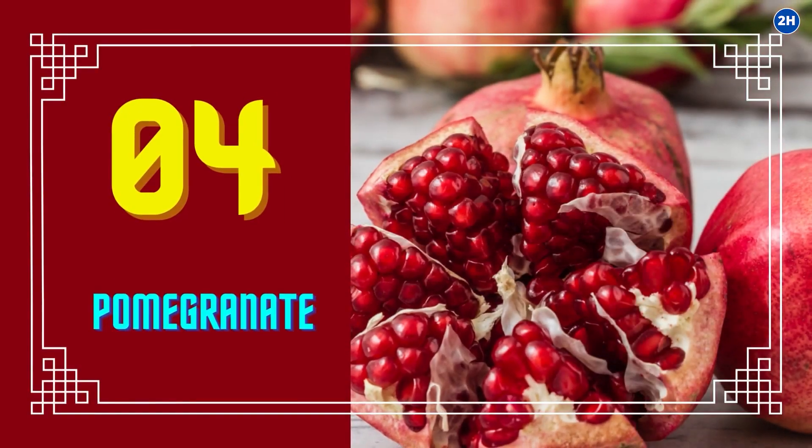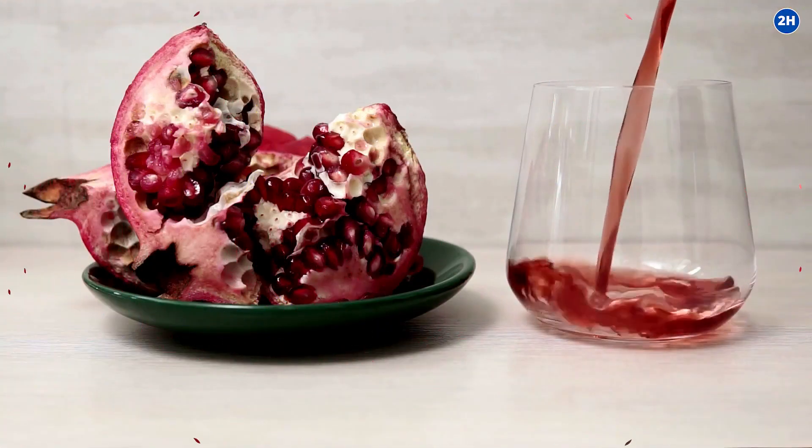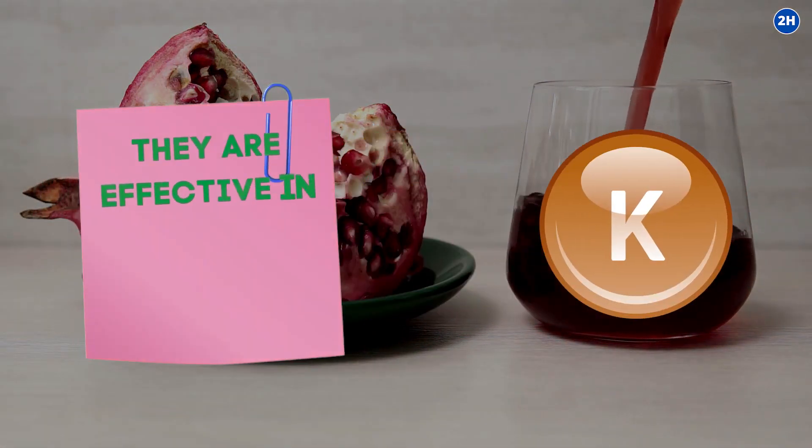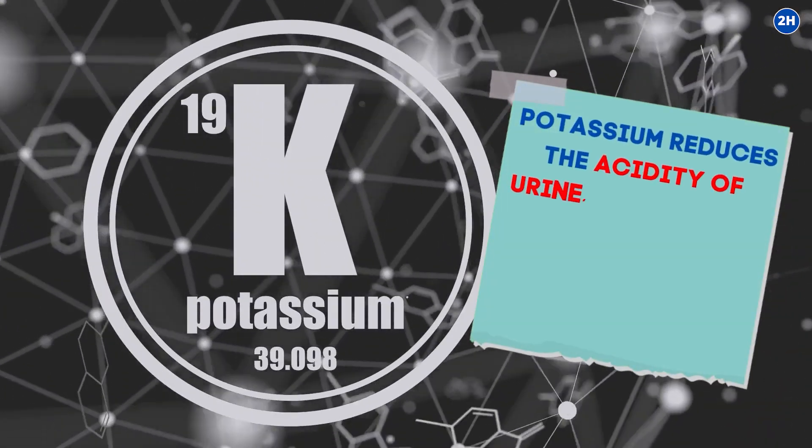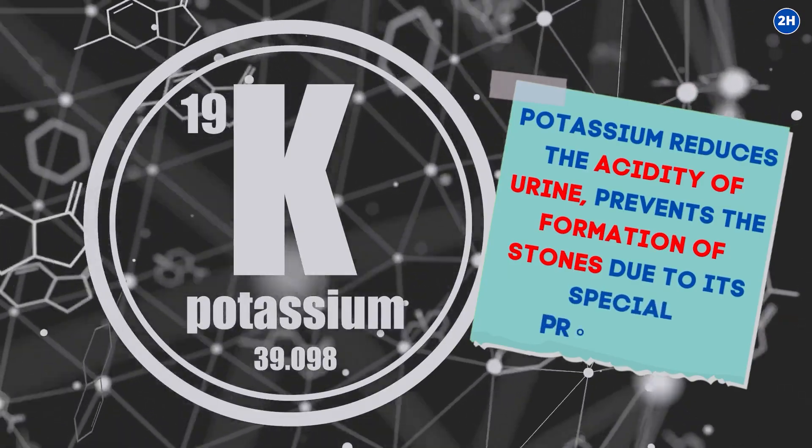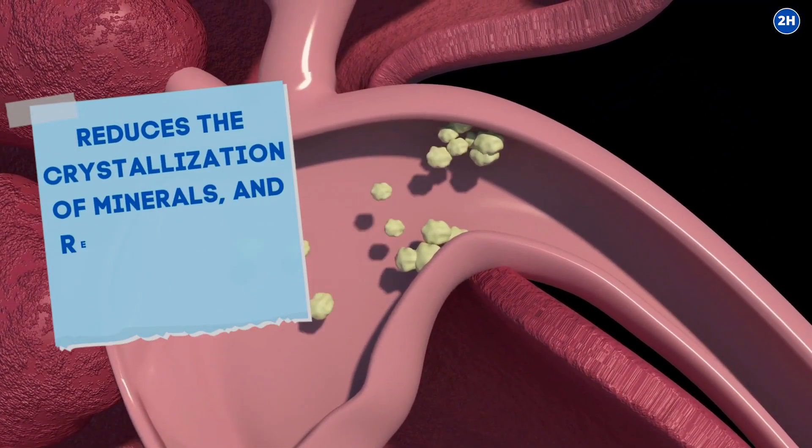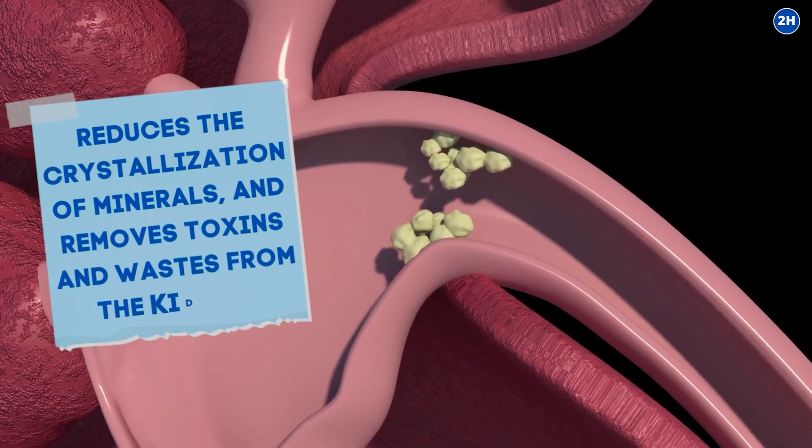4. Pomegranate. Both pomegranate juice and seeds are high in potassium, so they are effective in removing kidney stones. Potassium reduces the acidity of urine, prevents the formation of stones due to its special properties, reduces the crystallization of minerals, and removes toxins and wastes from the kidneys.